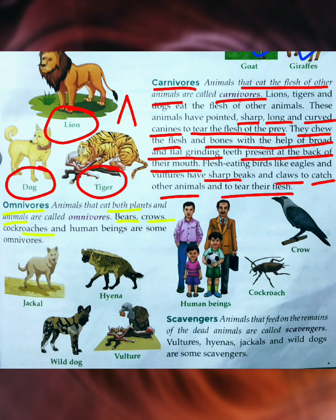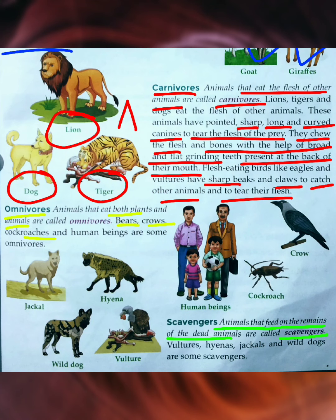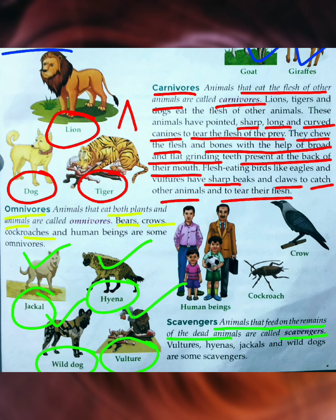Scavengers are animals that feed on the remains of dead animals. For example, when an animal dies and remains in one place for a long time, scavengers such as jackal, hyena, wild dog, and vulture eat upon them. These animals mainly eat dead animals or the remains of dead animals.